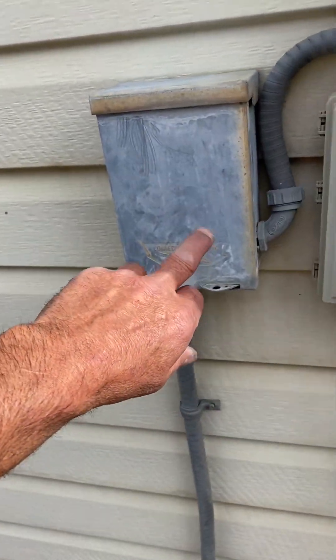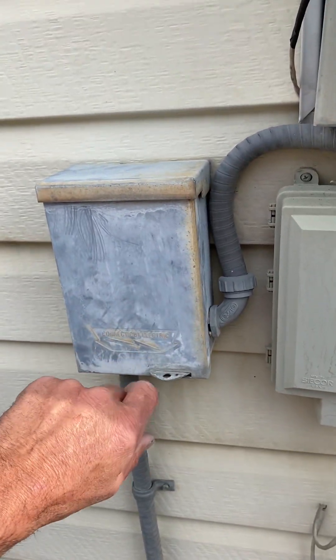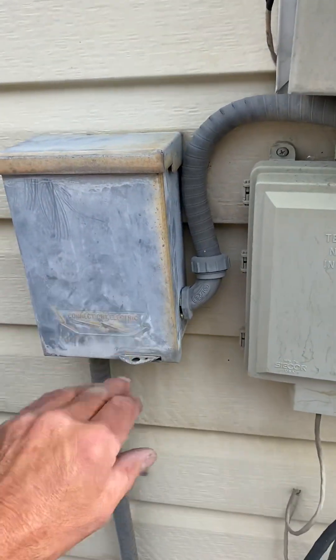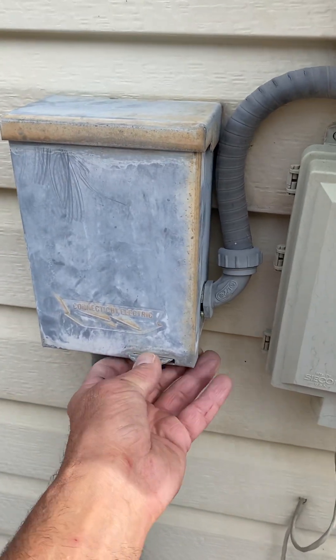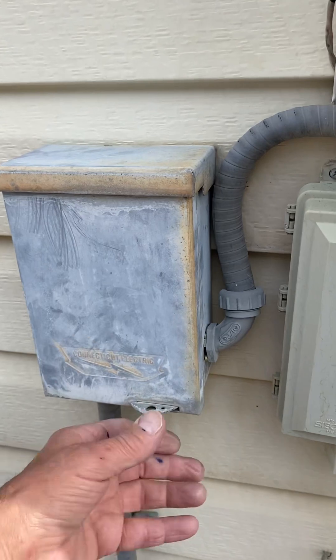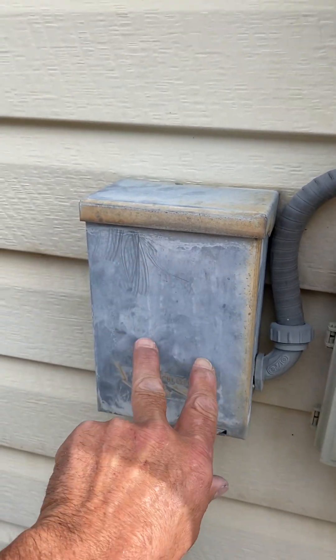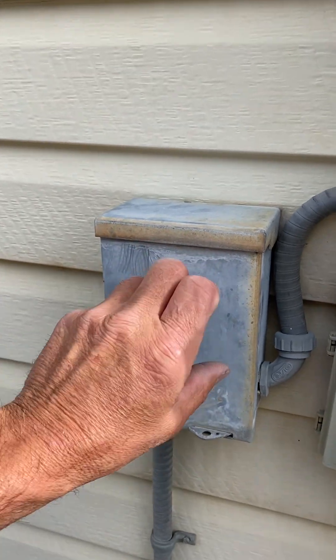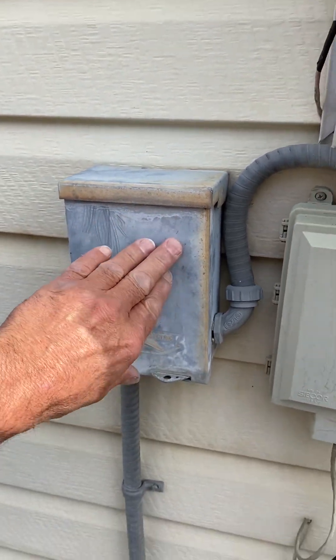This disconnect, it's wired hot to the main. He wants a new disconnect on it. With a breaker. So, right now it's fused disconnects. We'll put a just QO disconnect with a 30 amp breaker in it.